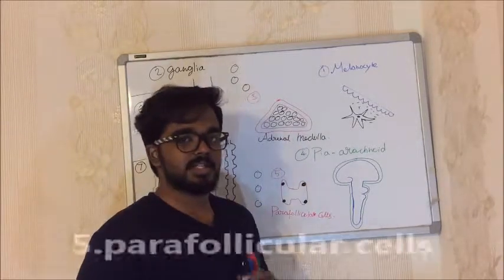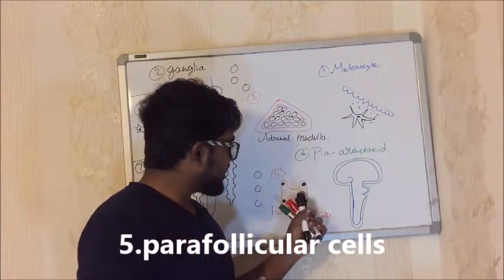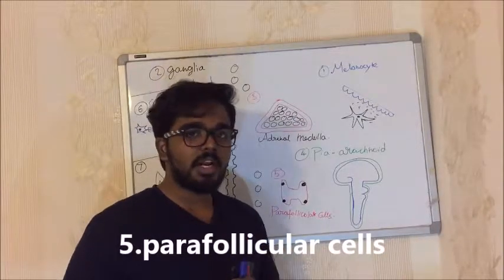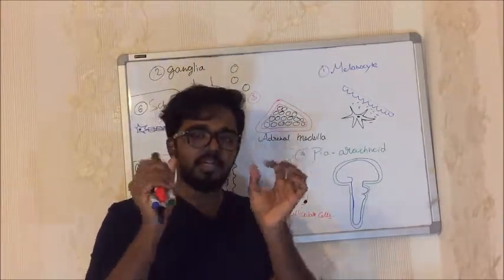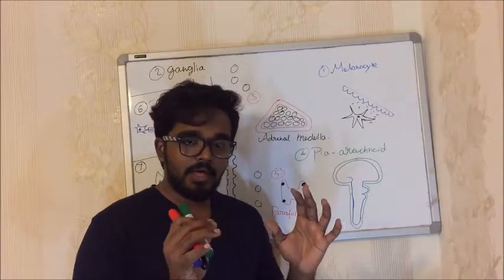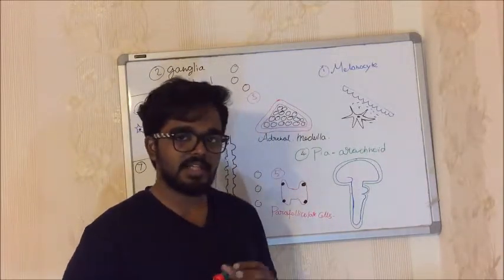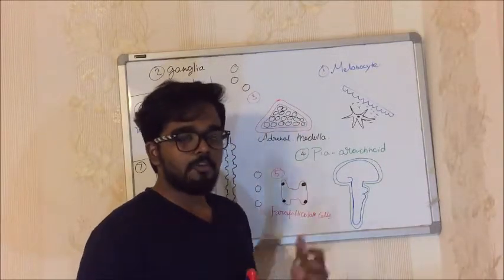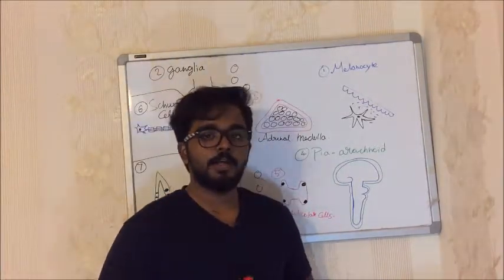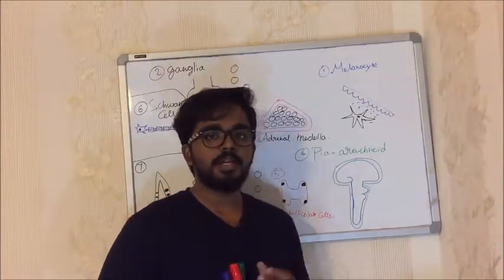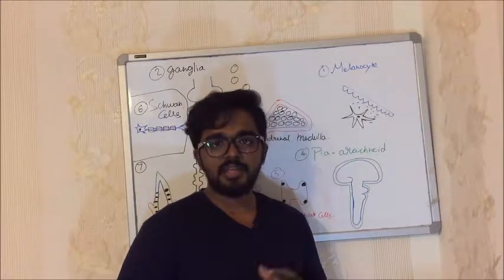Next: Parafollicular cells of the Thyroid gland. The posterior side of the thyroid gland is related to the parathyroid gland. The parafollicular cells are derived from Neural Crest Cells. Their function is to secrete Calcitonin.